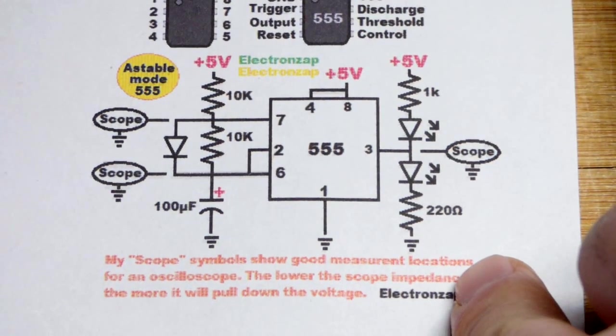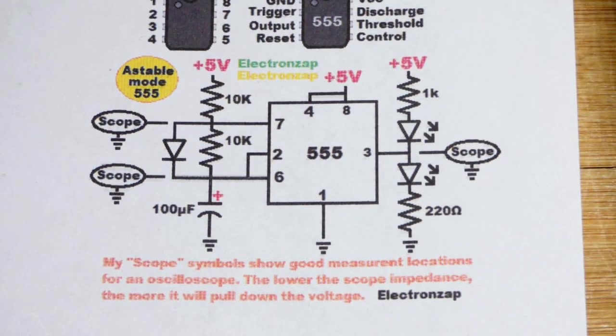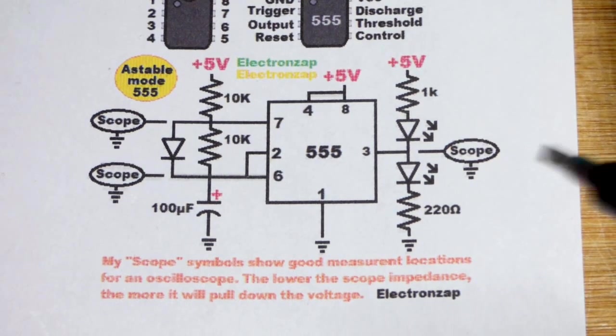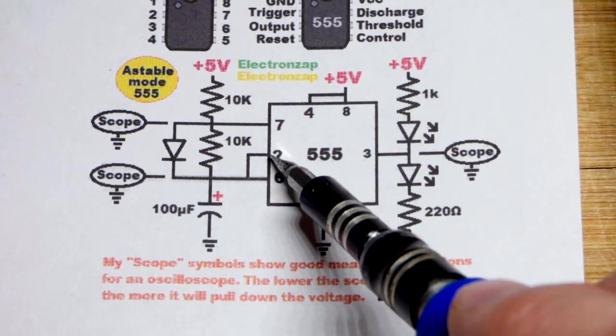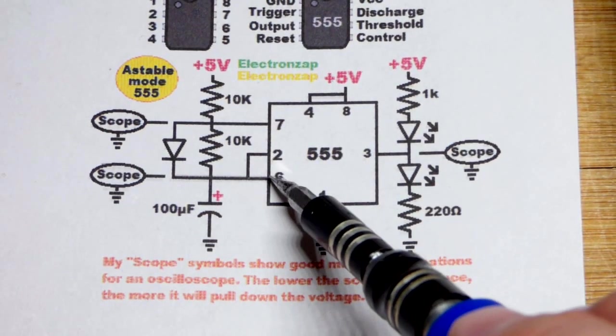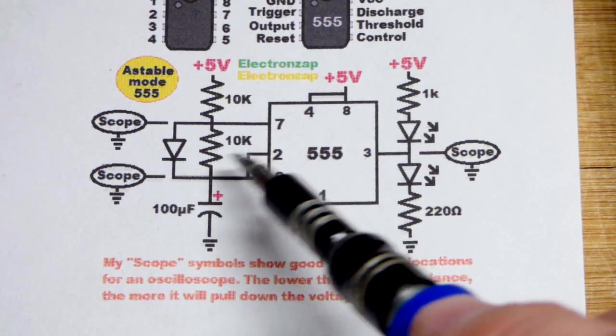We have this in astable mode. What sets the output high and low is the voltage at pin 2 and pin 6. To begin with, let's say the capacitor is discharged and we apply power.